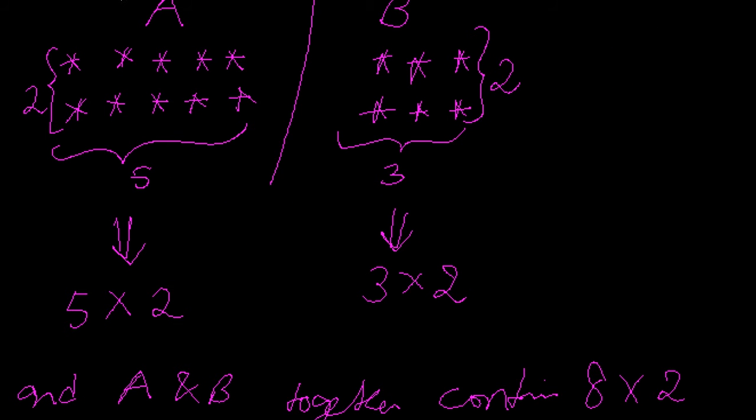Now what does this figure show me? In set A I have 5×2 stars, and in set B I have 3×2 stars. And together as a whole in A and B sets I have 8×2 stars. Why? Because in set A I have five stars and in set B I have three stars, so if I add them up I get eight. So in total I have eight stars, eight columns and two rows.